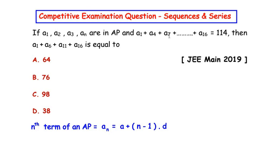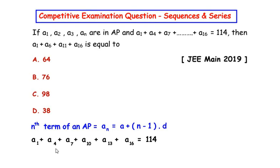The next step is to write the expansion of this given series. So here a1 plus a4 plus a7, now the next term is going to be a10 because we have to maintain the common difference of 3, then a13 and finally a16. So we have a1, a4, a7, a10, a13, a16 equal to 114.